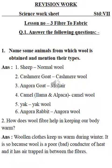The first type is answer the following questions. First one: name some animals from which wool is obtained and mention their types — which type of wool they are providing us.